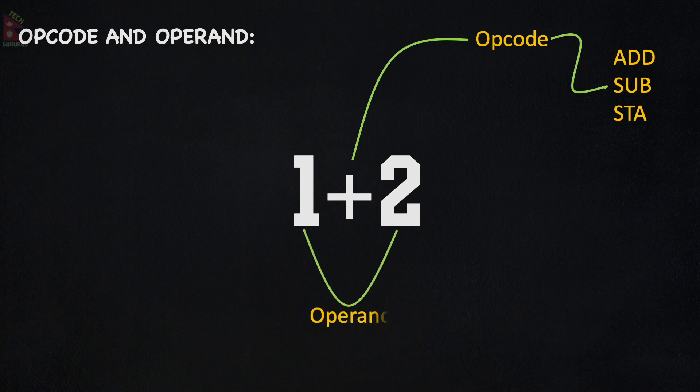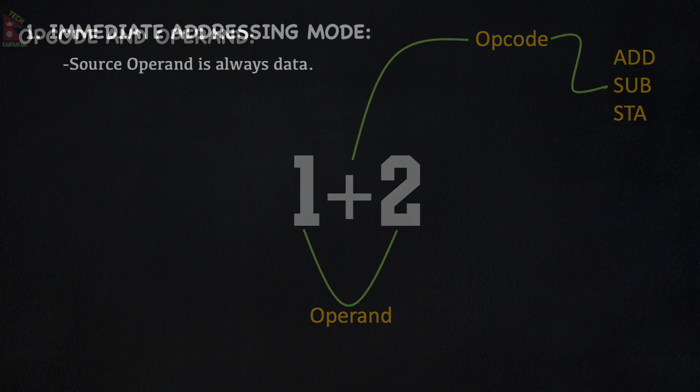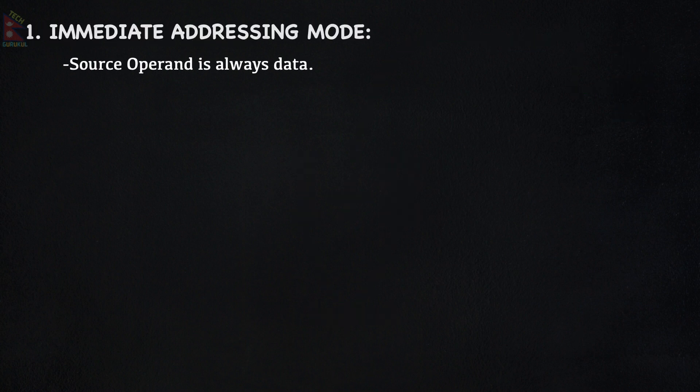Now, let's move to addressing modes. First of all, we have Immediate Addressing Mode. In this mode, the source operand is always data — that is, the data is directly specified in the instruction itself.